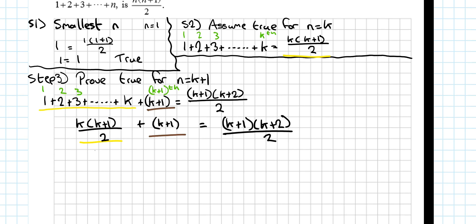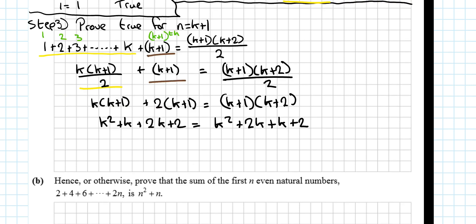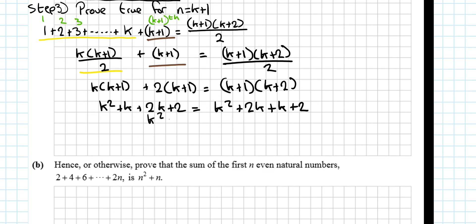Multiply everything by 2, so I'd get k by k plus 1 plus 2 k plus 1, is equal to k plus 1 by k plus 2. Multiply everything out, k squared plus k plus 2k plus 2, is equal to k squared plus 2k plus k plus 2. Left hand side equals right hand side.